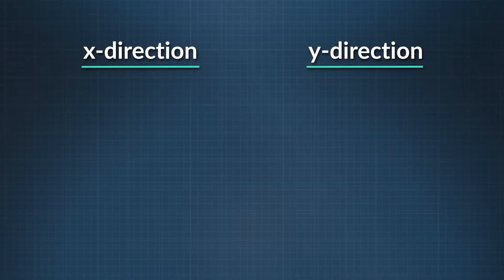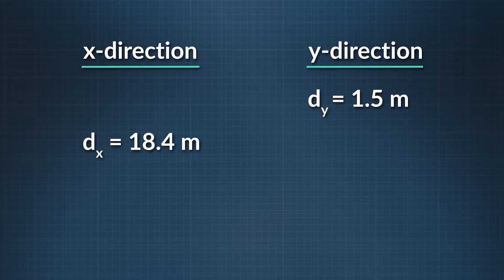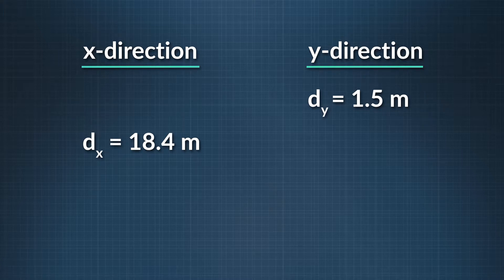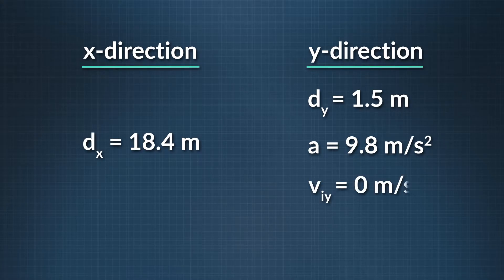Second, we fill the chart using the values we are given. The ball falls a vertical distance of 1.5 meters, so d sub y equals 1.5 meters. The ball travels 18.4 meters horizontally — this is our range. The acceleration due to gravity is 9.8 meters per second squared. In the vertical direction, our initial velocity is zero because the ball hasn't started to drop.